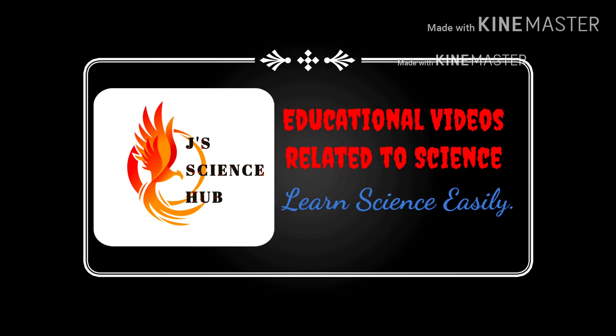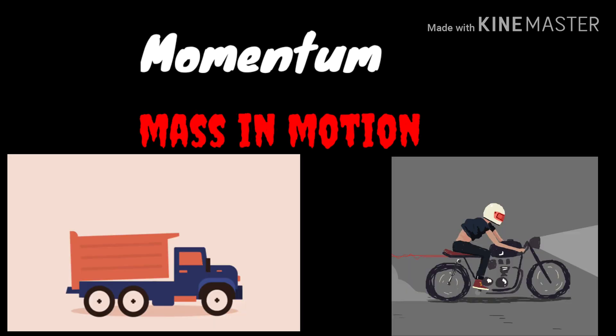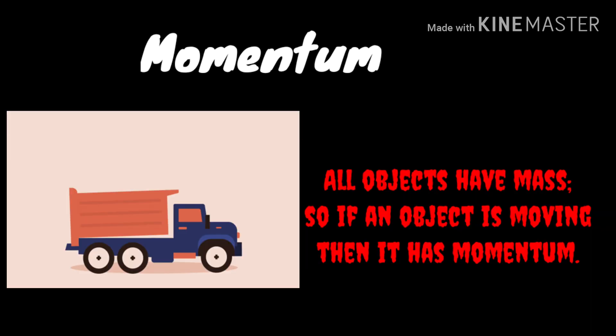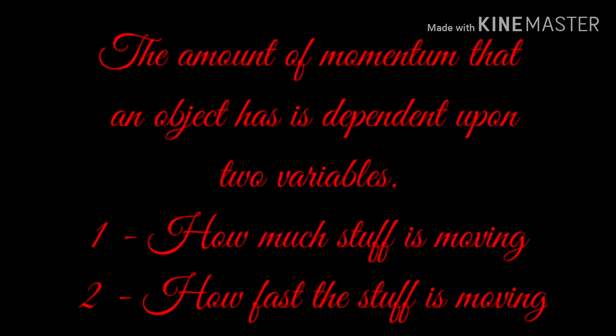Hello students, this is J Science Hub. Today we are going to study about momentum. The momentum of a moving body is a measure of how difficult it is to stop the motion of that body. Momentum can be defined as mass in motion. All objects have mass, so if an object is moving then it has momentum — it has its mass in motion.